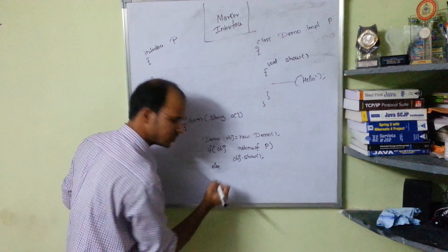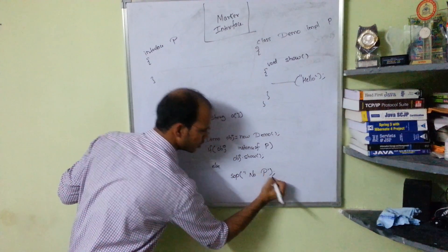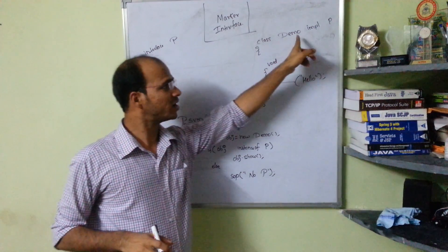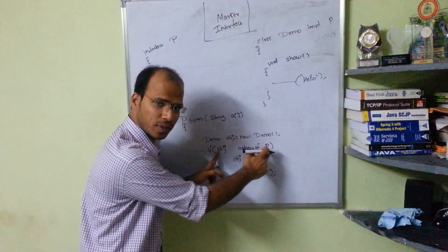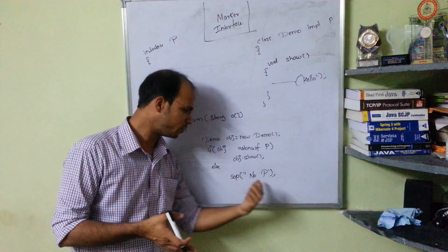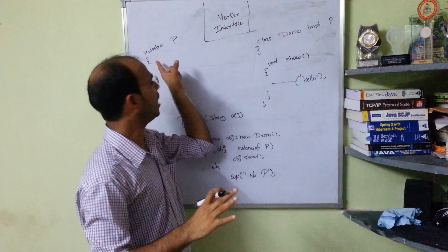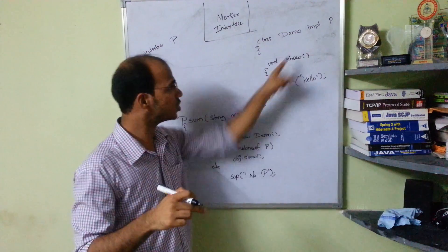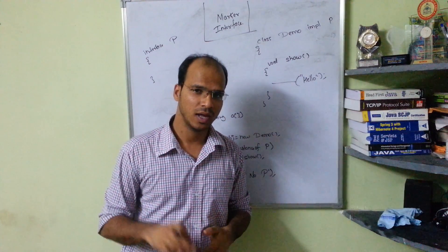Otherwise, in the else branch, we print 'no permission'. So if I don't implement interface P in the demo class, obj will not be an instance of P and it will print 'no permission'. But if I implement P, then obj is an instance of P and we can call obj.show(), which will print 'hello'.